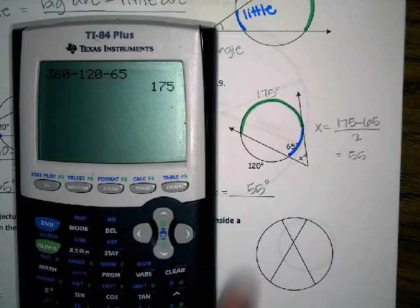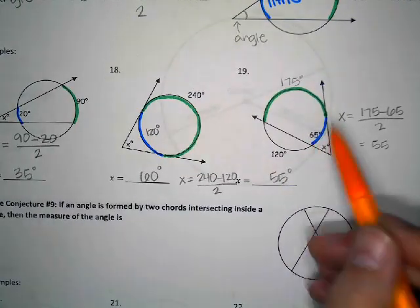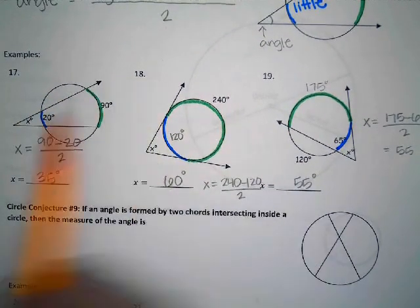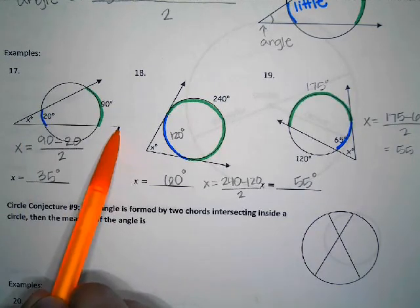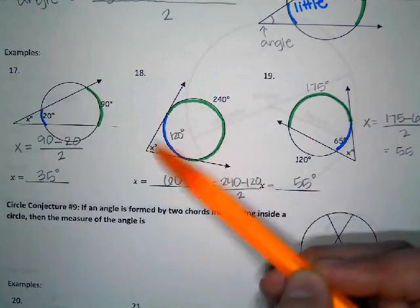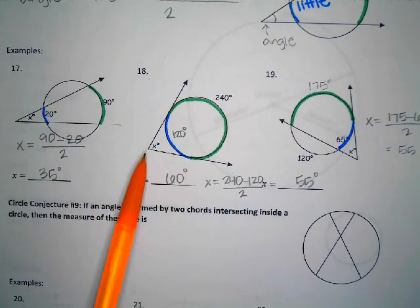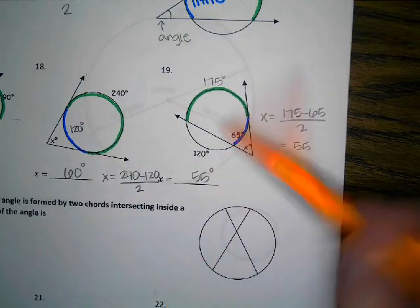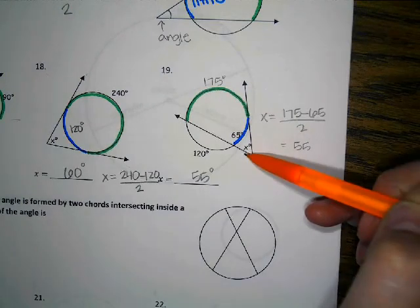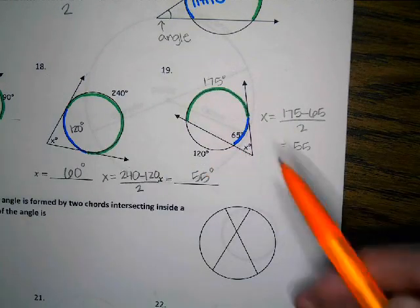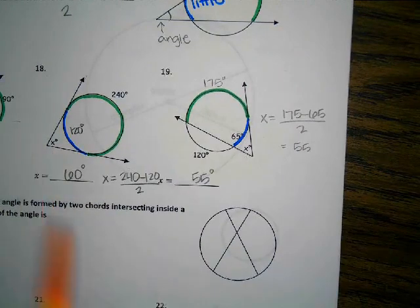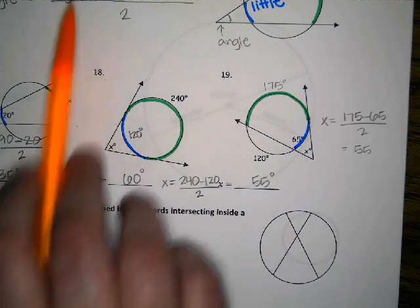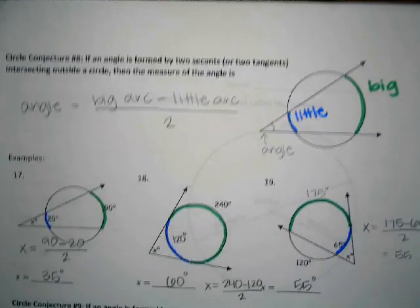In example 17 we have a secant line and a secant line. In example 18 we have a tangent line and a tangent line, which is why the picture looks a little different. In example 19 they have one secant line and one tangent line - that's why all the pictures look slightly different. They're showing you the different ways that an angle on the outside of a circle could be formed. But all three ways still use circle conjecture 8: big arc minus little arc divided by two. Does that make sense?